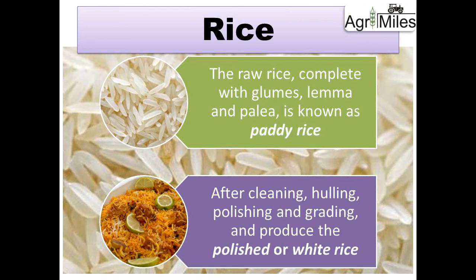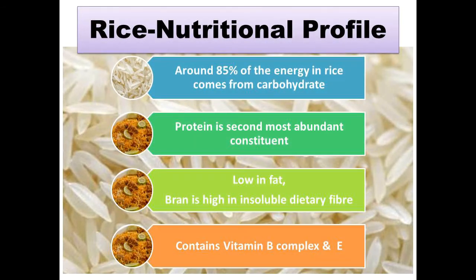Paddy rice is the raw rice which has the complete set of glumes intact, like the lemma and palea. It is generally the raw form harvested from the field. After cleaning, hulling, polishing, and grading, it produces the polished white rice. This is the only processing difference between paddy rice and polished rice.